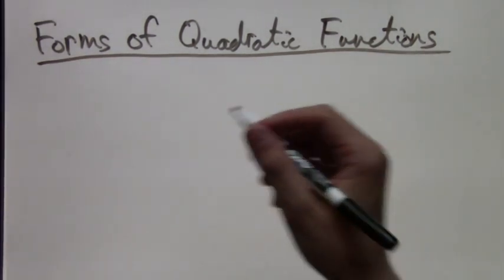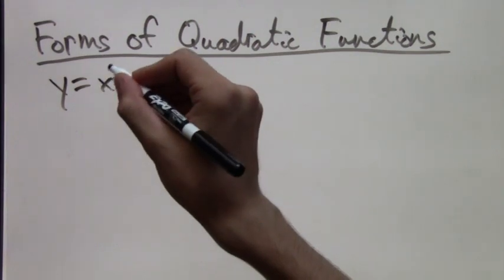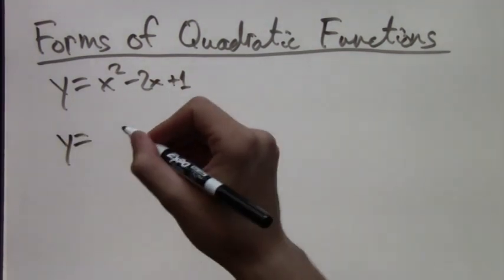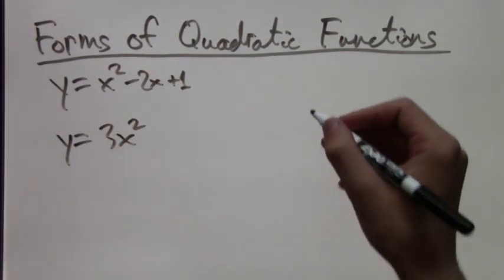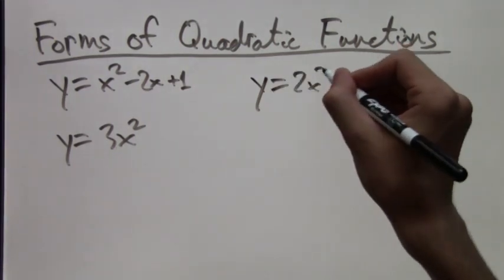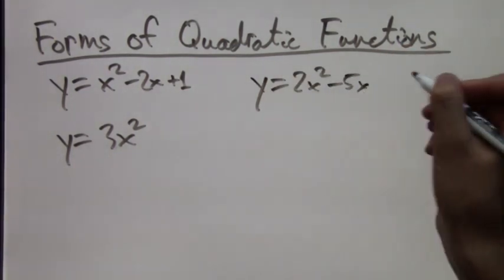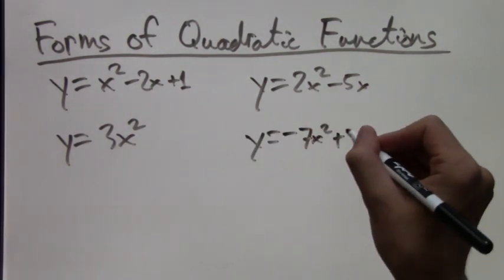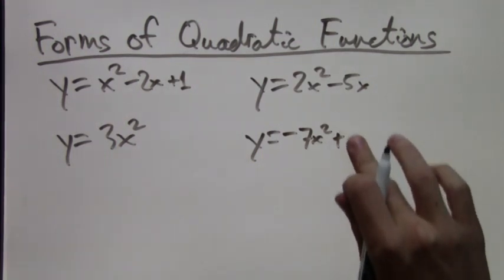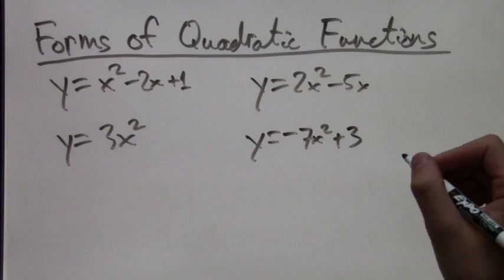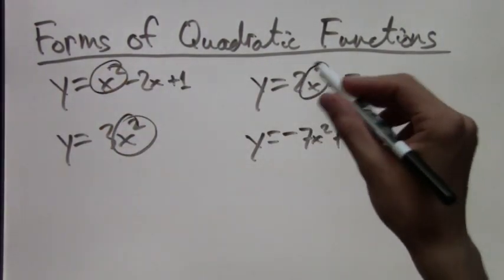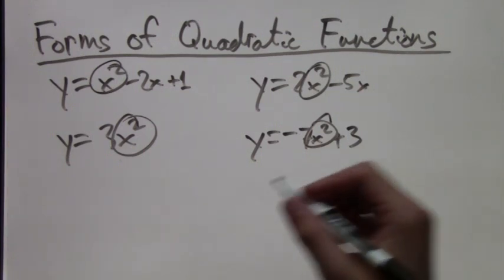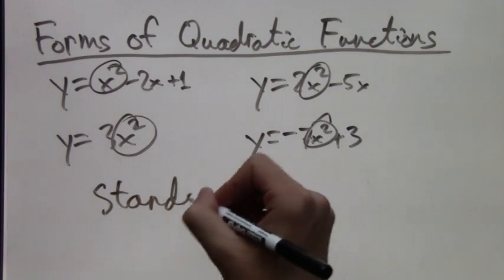I'll show you what I mean. So far we've mostly looked at quadratic equations that are the form, for example, y equals x squared minus 2x plus 1, or y equals 3x squared, or y equals 2x squared minus 5x, or y equals negative 7x squared plus 3. These are all written in what's called standard form and they're quadratic because they have the x squareds. This is called standard form, the standard form of a quadratic function.